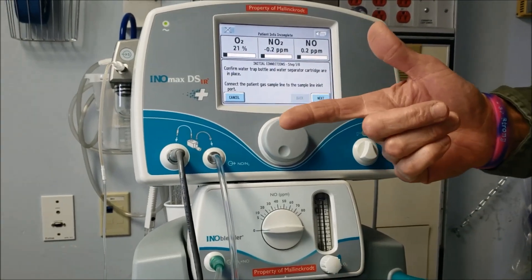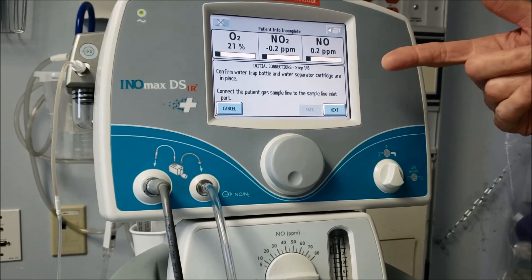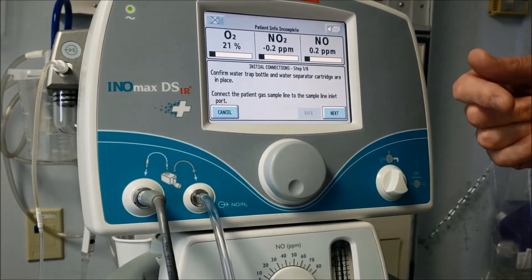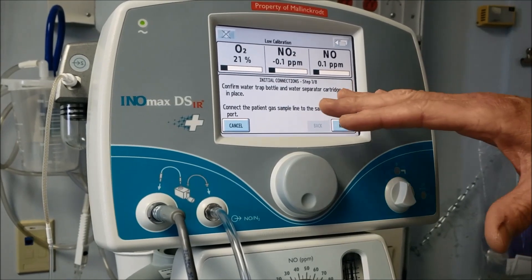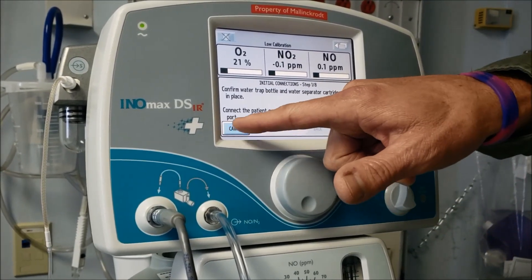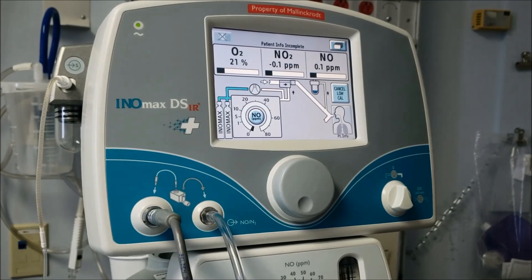After you assemble your equipment and you turn the machine on, this is the initial screen that's going to come up. And when we do a right heart cath nitric administration, we don't need to do any pre-checks. So you can simply hit cancel and you're ready to go.